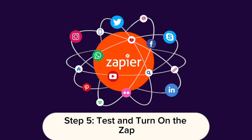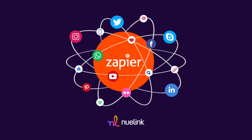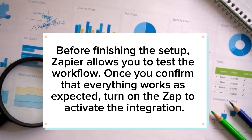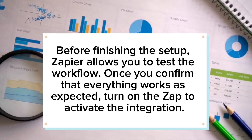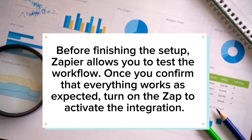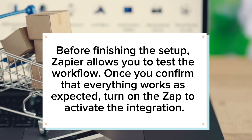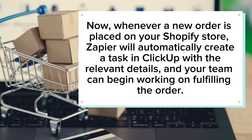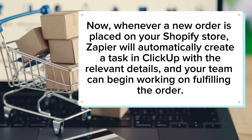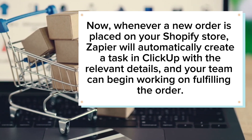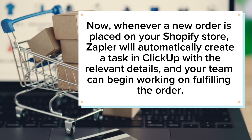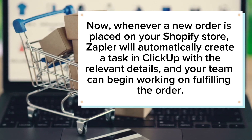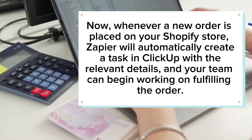Step 5: Test and turn on the Zap. Before finishing the setup, Zapier allows you to test the workflow. Once you confirm that everything works as expected, turn on the Zap to activate the integration. Now, whenever a new order is placed on your Shopify store, Zapier will automatically create a task in ClickUp with the relevant details, and your team can begin working on fulfilling the order.